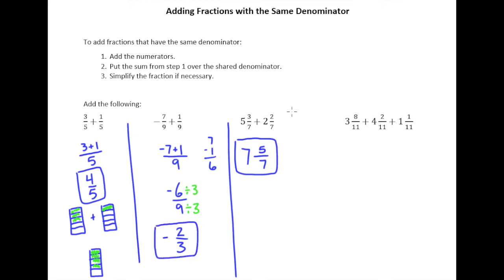Alright finally we have 3 and 8 elevenths plus 4 and 2 elevenths plus 1 and 1 eleventh. So first let's add up the whole parts: we have 3 plus 4 is 7 plus 1 is 8. Then we have 8 plus 2 is 10 plus 1 is 11, and then we put that sum over the denominator. So I have 8 and 11 elevenths.